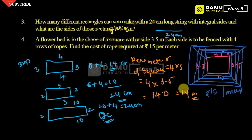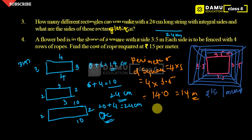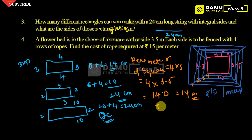We get 14 meters for one row. There are 4 rows, so 14 meters times 4 rows. The total perimeter for fencing is 14 into 4.